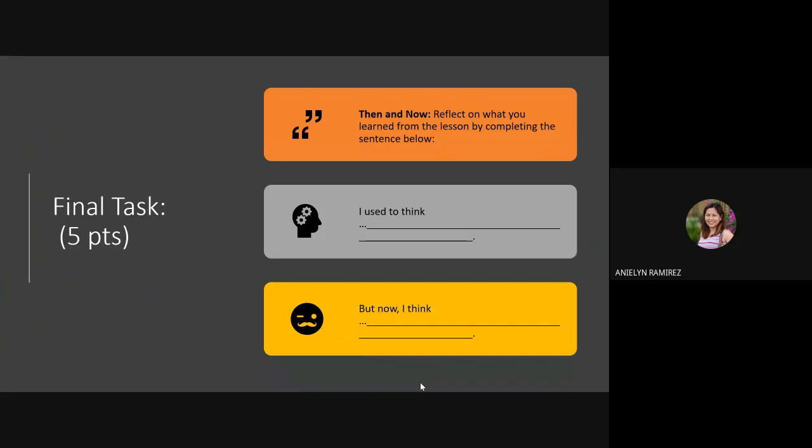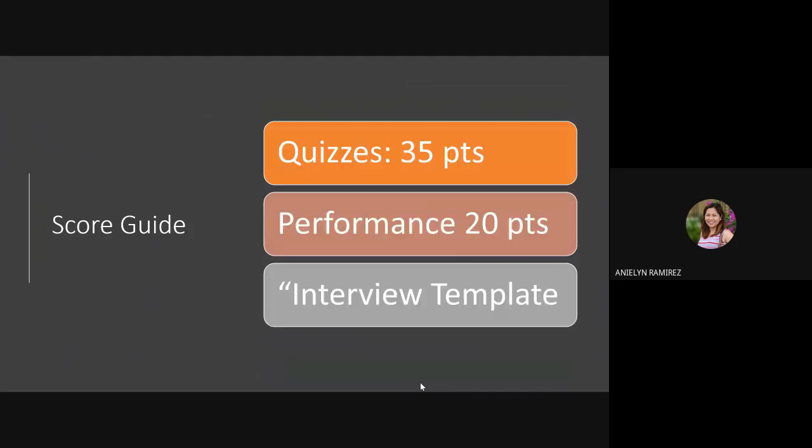So let's go back to our score guide. Quizzes natin, total of 35 points. And let me reiterate this again to you: quizzes po ay 40% lang of your English grade. Performance natin, 20 points—kahit 20 points lang yan, performance is equivalent to 60% of your grade. So ano yung 20 points na yun? Ito yung interview template or yung interview plan. So meaning, sa lesson 1 pa lang, you have a total of 55 points. If you're going to look at it in my class record, that will be comprised of two columns: one column under quizzes, one column under the performance.